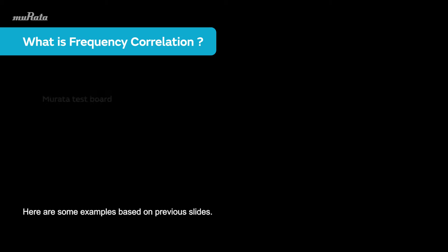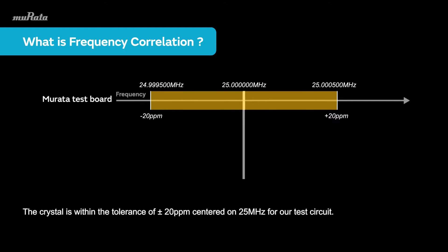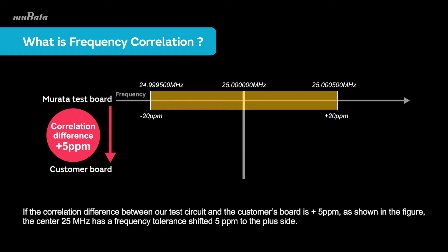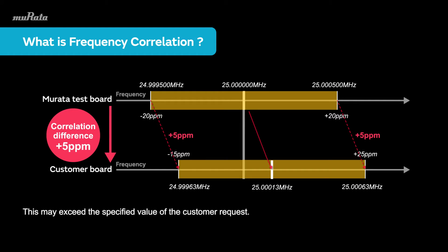Here are some examples based on previous slides. The crystal is within the tolerance of ±20 ppm centered on 25 MHz for our test circuit. If the correlation difference between our test circuit and the customer's board is +5 ppm as shown in the figure, the center 25 MHz has a frequency tolerance shifted 5 ppm to the plus side. This may exceed the specified value of the customer's request.